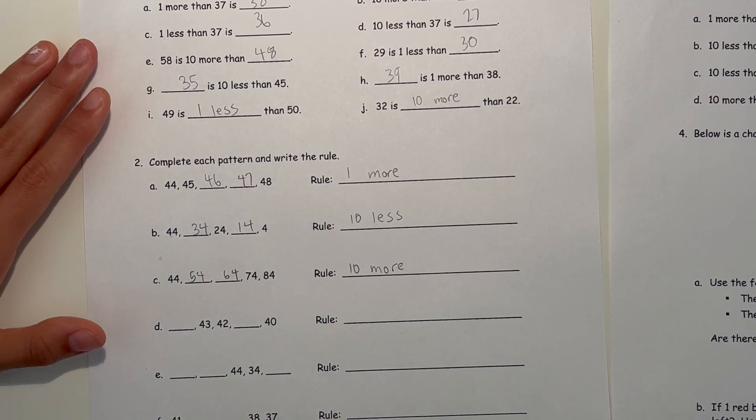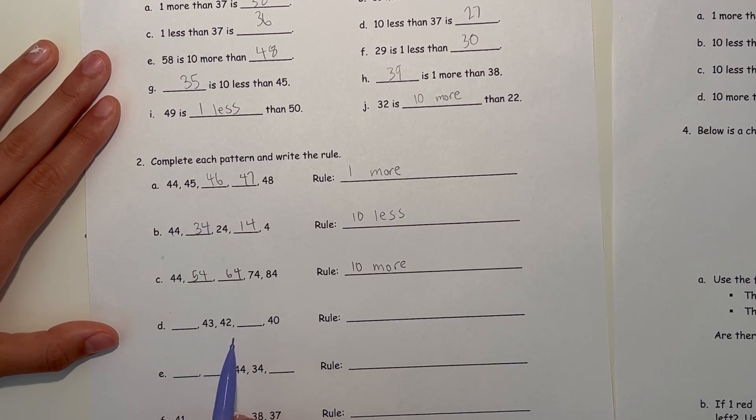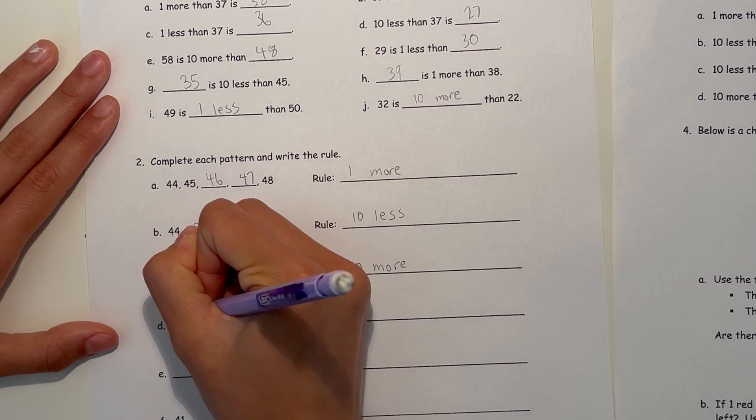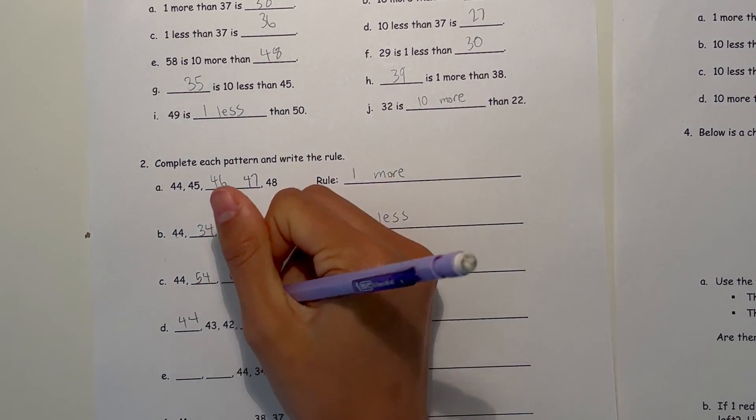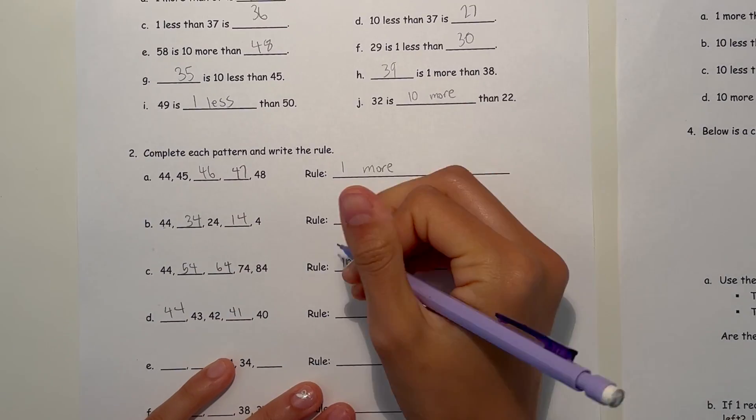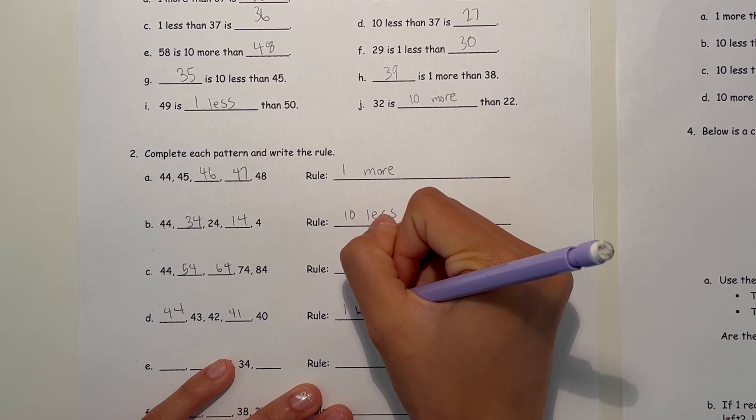Now D. So 43 to 42, that's one less, which means this must be 44. And then 43, 42, 41, 40. So the rule here would be 1 less.